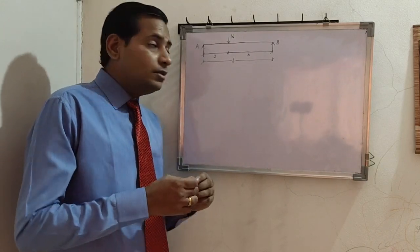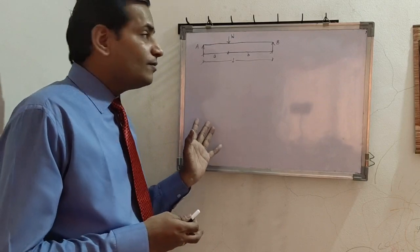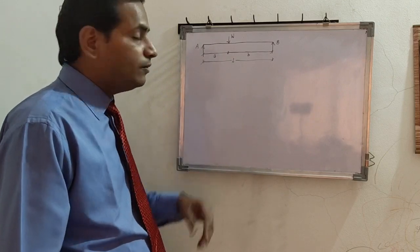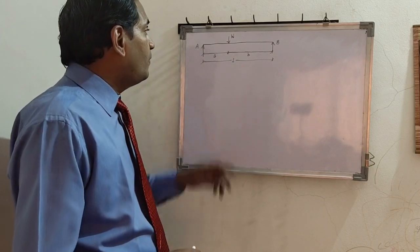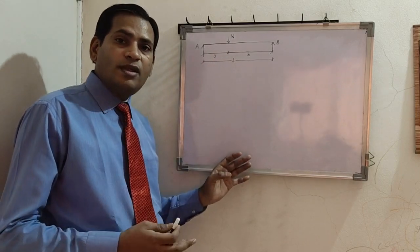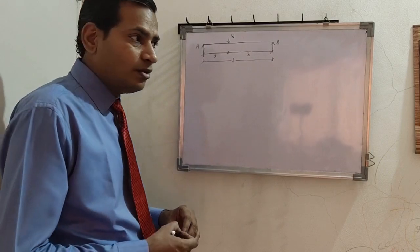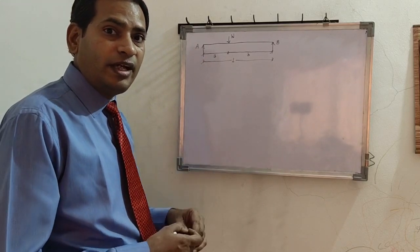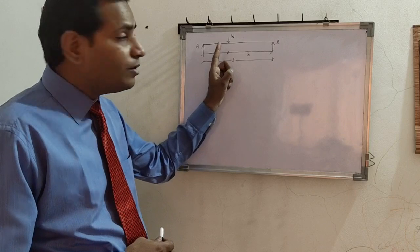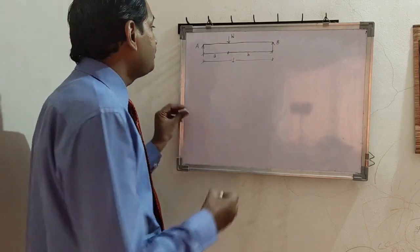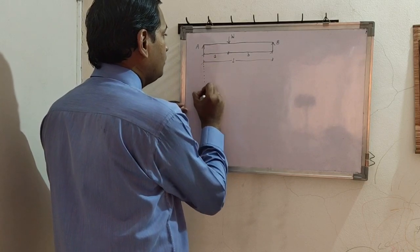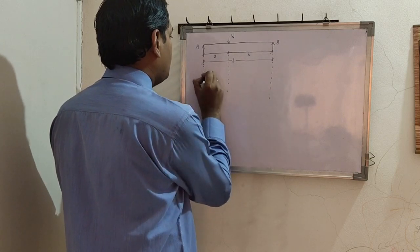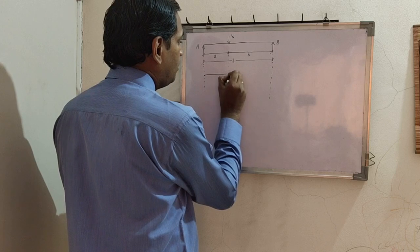As per strain energy theory or any elastic theory, whenever a beam is subjected to loading it is going to deform, so the deformed shape is a curve. However, the deformation under the point load will be very small. Hence, we approximate the curve as straight lines — from support to point load and from point load to support. This deformed shape is known as the beam mechanism.